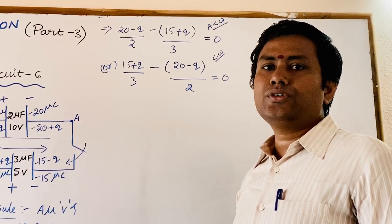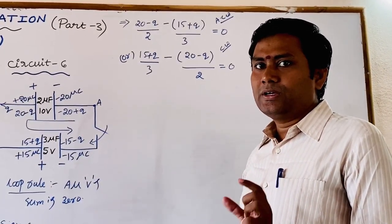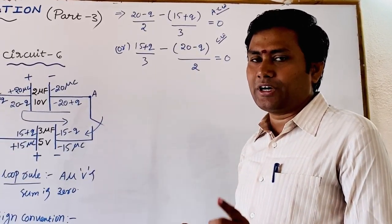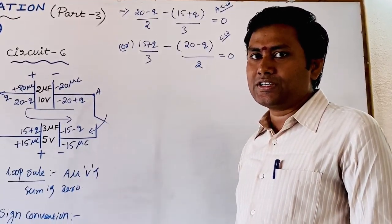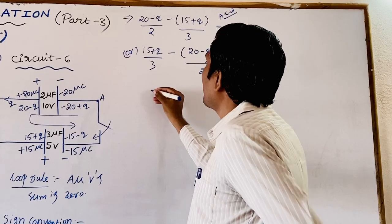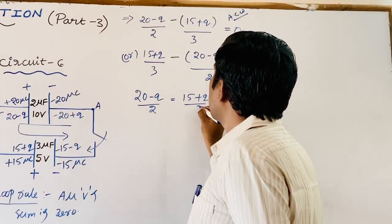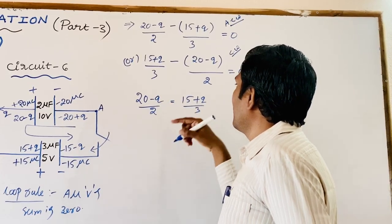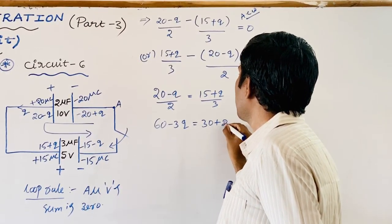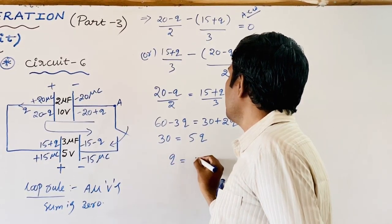Using the equation from the anticlockwise traversal: (20 − Q)/2 = (15 + Q)/3. Cross-multiplying: 60 − 3Q = 30 + 2Q, so 30 = 5Q, giving Q = 6 microcoulombs. After closing the switch, the charge transferred between capacitors is 6 microcoulombs.